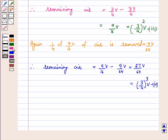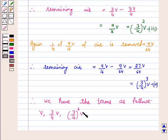From 1, 2, 3, 4, we have the terms as follows: V, 3V/4, (3/4)²V, (3/4)³V, and so on.